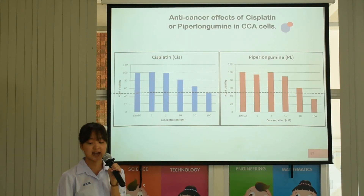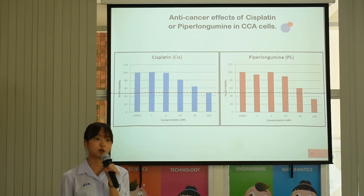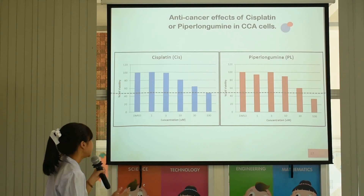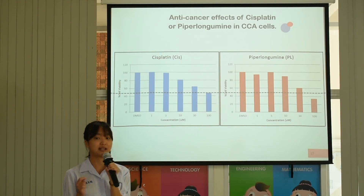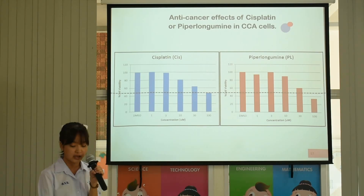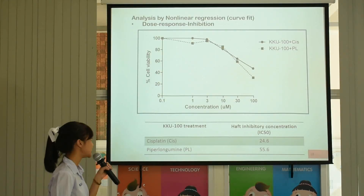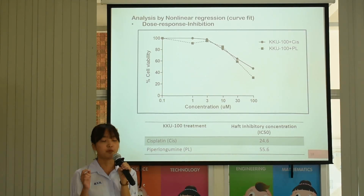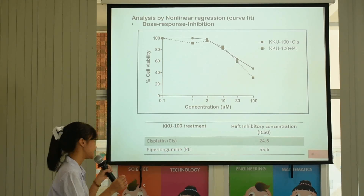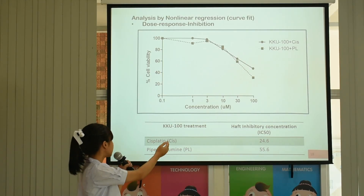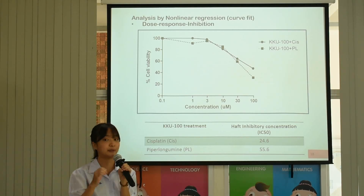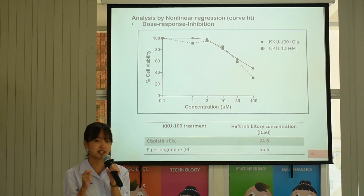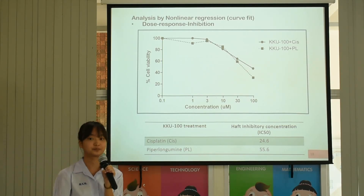Now, moving to the results of this study. In the first experiment, I tested the anti-cancer effects of Cisplatin or Piperlongumine alone. I found that the anti-cancer effects of Cisplatin or Piperlongumine alone are comparable. However, when I checked the half inhibitory concentration, called IC50, you can see that the IC50 of Cisplatin is lower than that of Piperlongumine. This result shows that CCA cells are more sensitive to Cisplatin than to Piperlongumine.